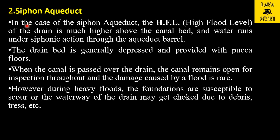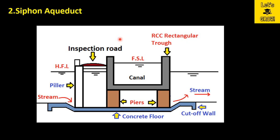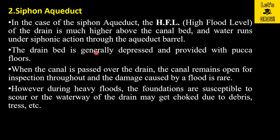The second structure is the siphon aqueduct. In this case, the HFL — high flood level — of the drain is much higher than the canal bed, and water runs under siphonic action through the aqueduct barrel. It is similar to the aqueduct, but the only difference is that the flow is under siphonic action. Here you can see the stream flowing with its high flood level higher than the canal bed level, so water flows under siphonic action.